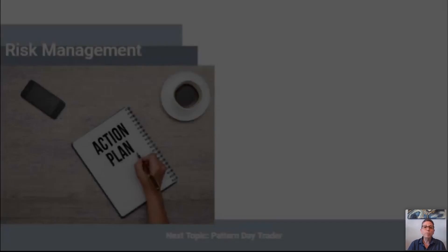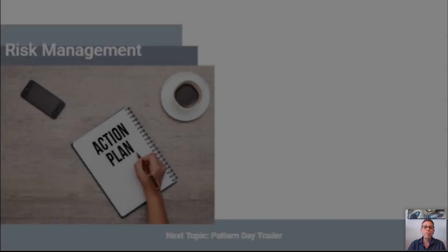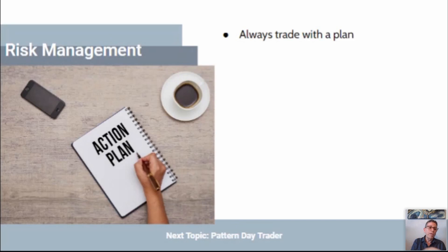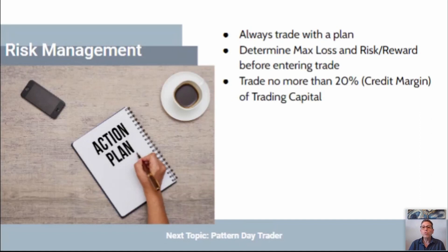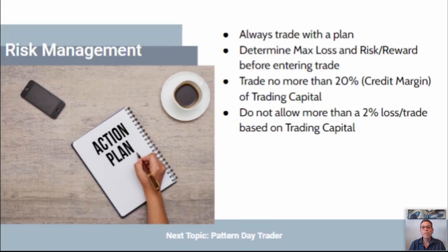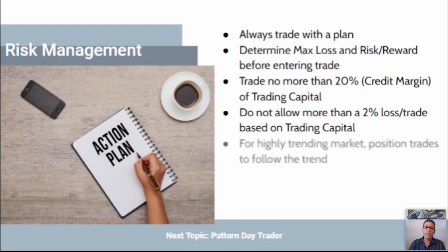Let's talk about risk management. Number one: always trade with a plan. Number two: determine max loss and risk/reward before entering a trade. Trade no more than 20% capital on these trades — always keep 80% cash in your account. Do not allow more than 2% loss based on trading capital at risk — that way it keeps you solvent. For highly trending markets, follow the trend. Size your trades to ensure emotions are not part of the decision-making process. I always say trade small and trade often.